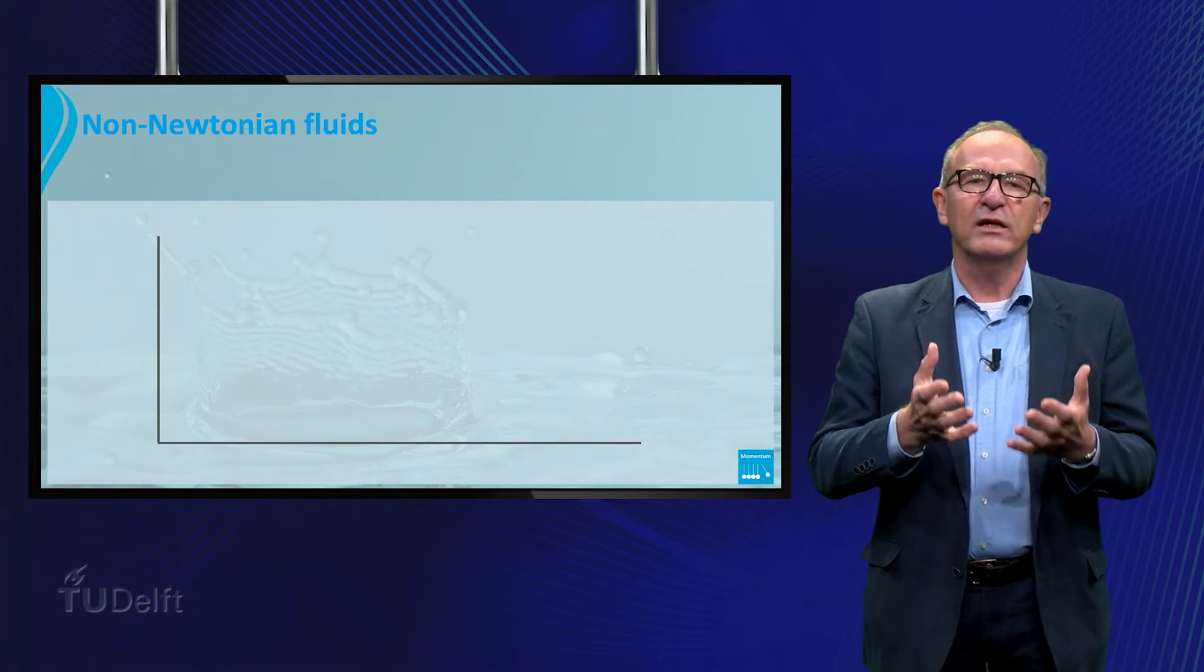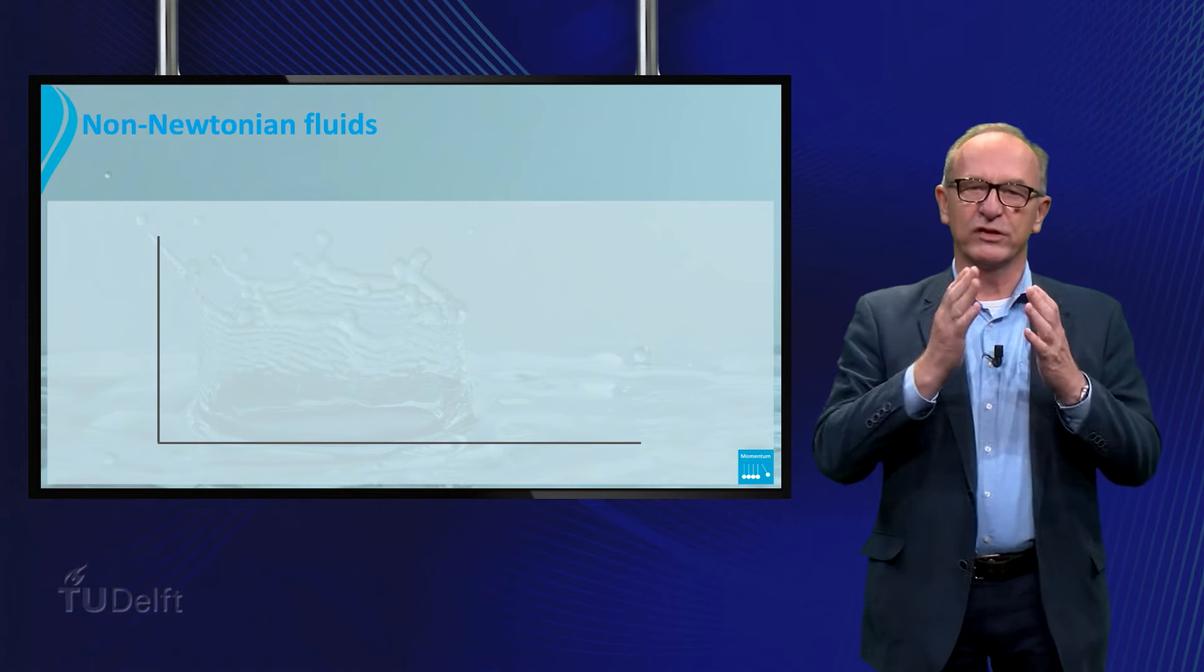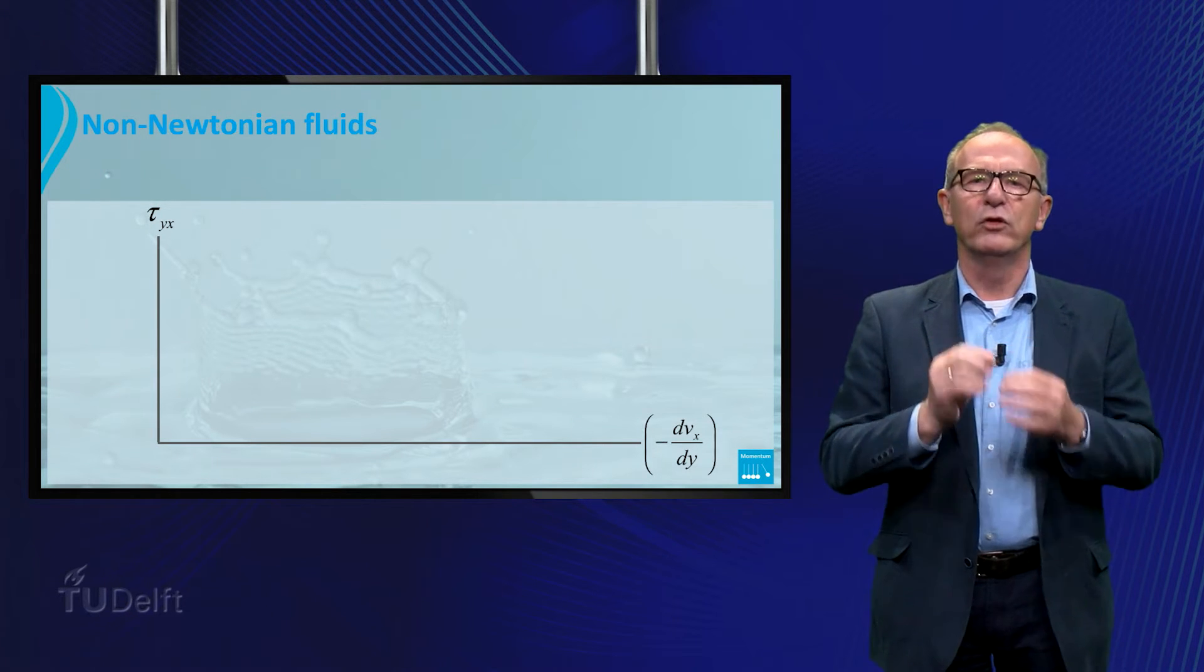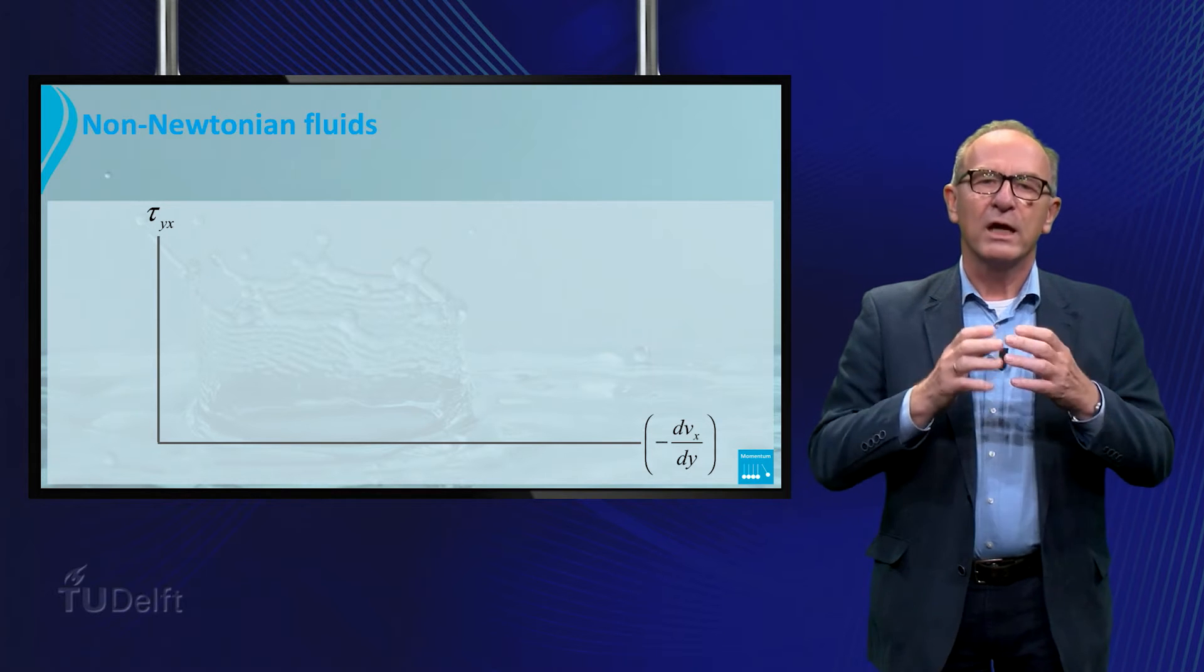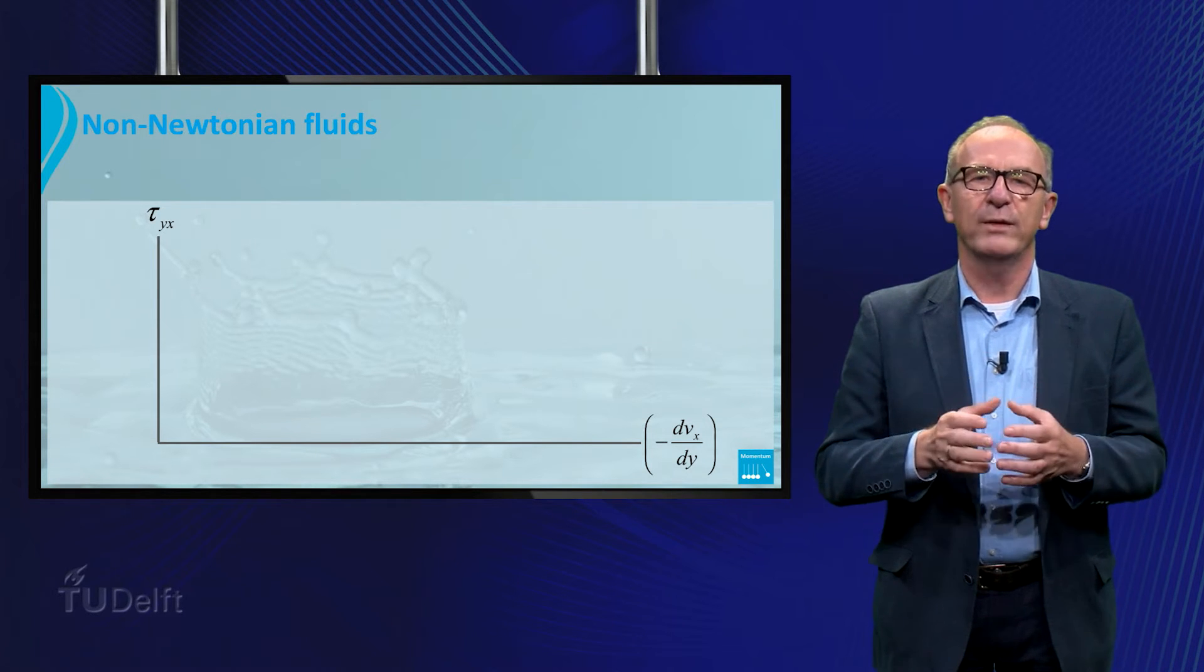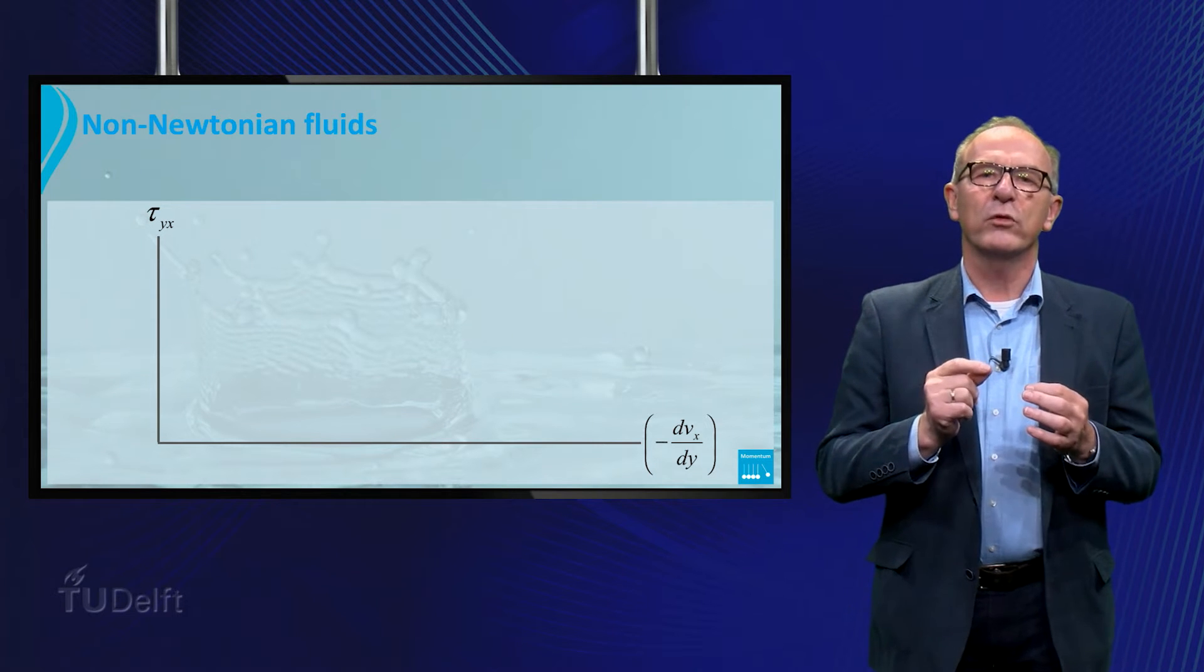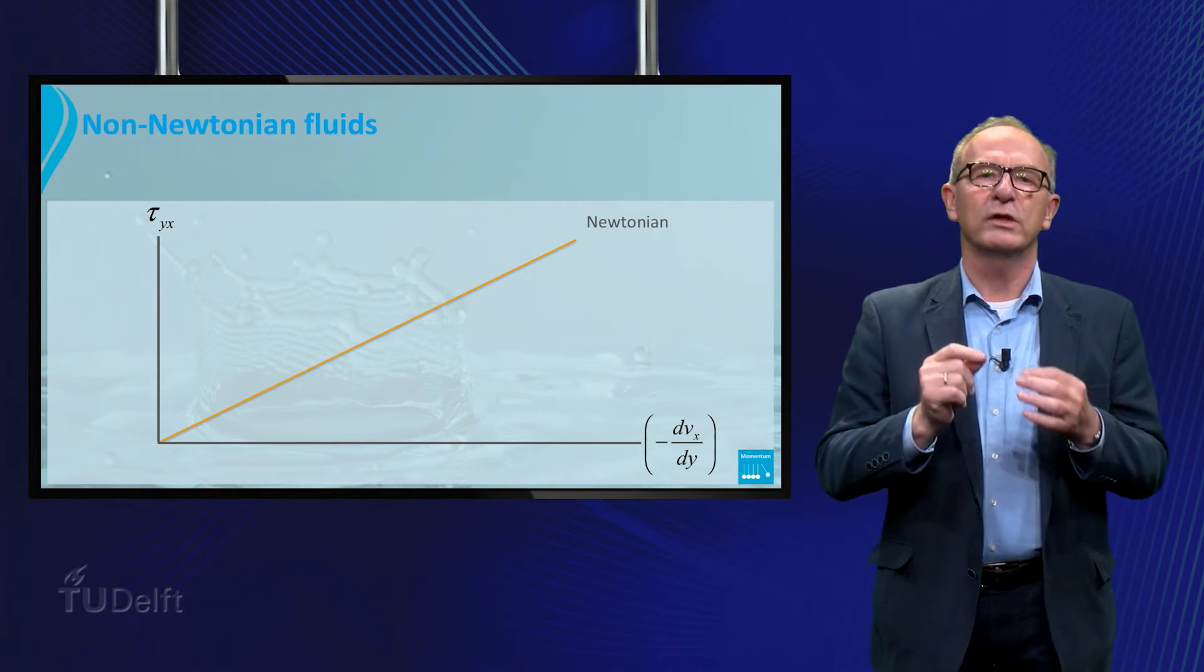Generally we can say that if the relationship between the shear stress and the shear rate is not linear, we speak about non-Newtonian fluids. Let's look at a few often used models to describe the shear stress-shear rate relationship. Let's first draw a line for a Newtonian fluid like water.